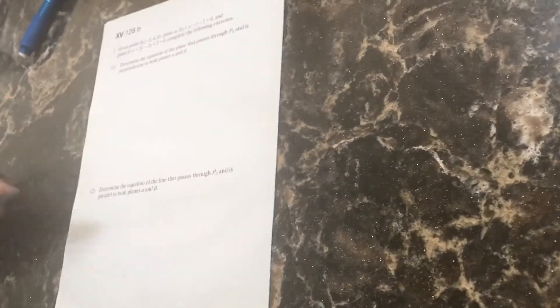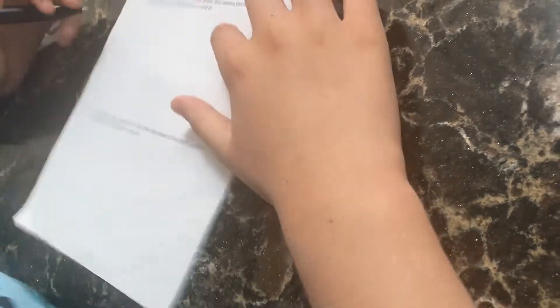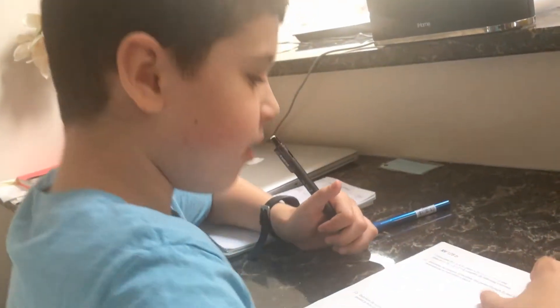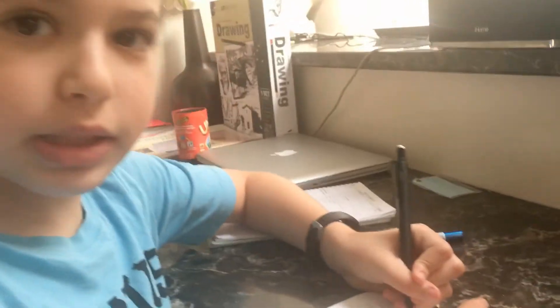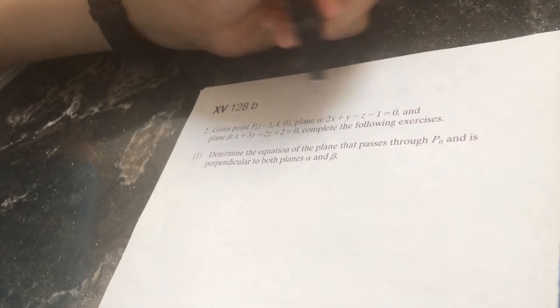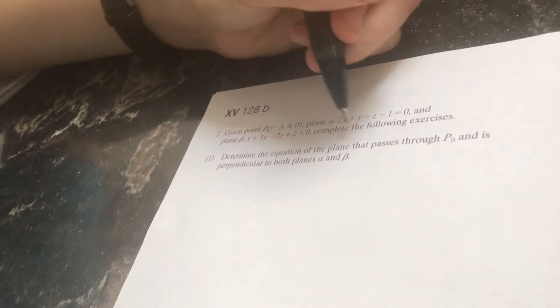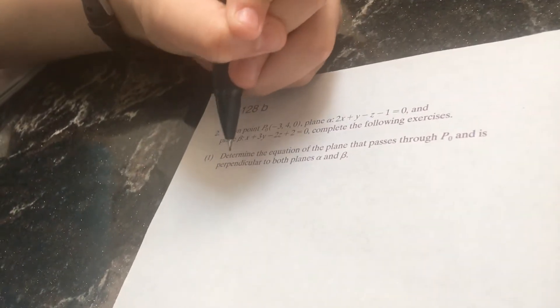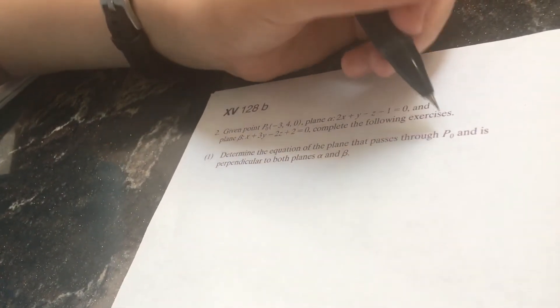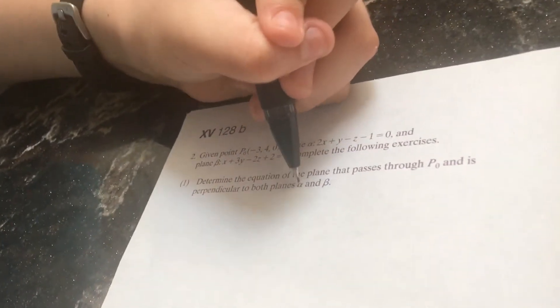Now, we're going to do this very same example, except different coordinates and different planes. So, what we're going to do to start off is rather simple. It's given point negative 3, 4, and 0, plane alpha, 2x plus y minus z minus 1 equals 0, and plane beta, x plus 3y minus 2z plus 2 is 0. Complete the following exercises. First, we're going to determine the equation of the plane that passes through point P naught and is perpendicular to both planes, alpha and beta.